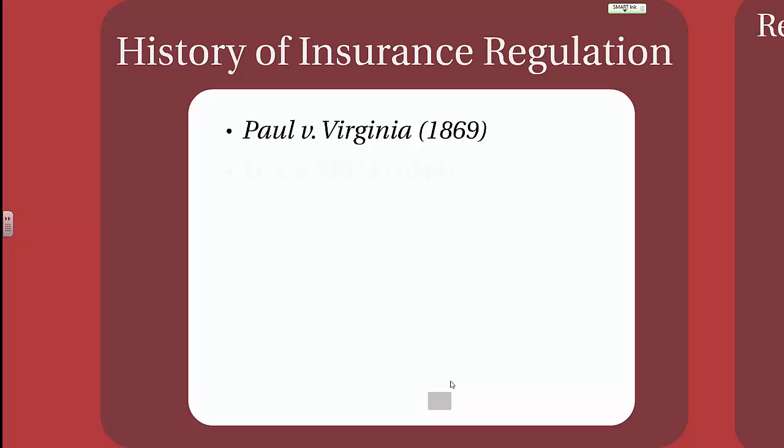So for 75 years, insurance was regulated by the states until U.S. v. SEUA, another United States Supreme Court case, which ultimately addressed the issue of insurance regulation. SEUA was the Southeastern Underwriters Association, similar to today's ISO, or Insurance Services Office. SEUA's members were insurance companies for whom SEUA developed policy forms and rates. The U.S. Attorney General accused SEUA of engaging in monopolistic pricing because it collected data from all of its members and then developed and made available rates based on all of that data.